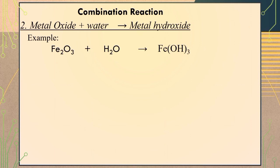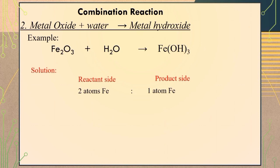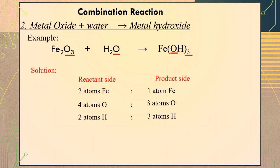By inspection, there are two atoms of iron on the reactant side while we only have one atom of iron on the product side. For oxygen, we have four atoms on the reactant side — that is three plus one equals four — while on the product side we only have three, that is one multiplied by three equals three. For hydrogen on the reactant side we have two atoms, while on the product side we have three atoms, making the equation unbalanced.